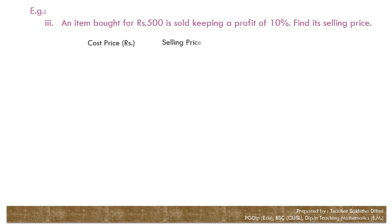The third example. An item bought for 500 rupees is sold keeping a profit of 10%. Find its selling price. You know the meaning of 10%. 10% means if the cost price is 100, the selling price is 110 rupees. You can illustrate this data in an arrow diagram. If the cost price is 100 rupees, the selling price is 110 rupees. Let's assume the selling price of the item which is bought for 500 rupees as X rupees.